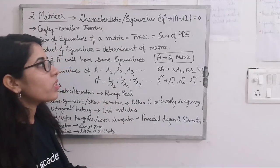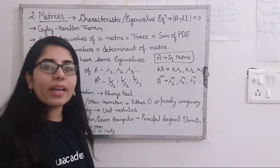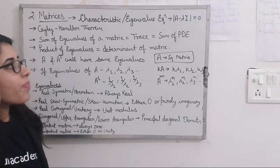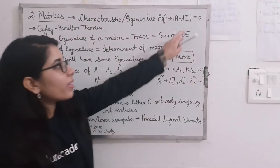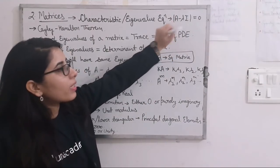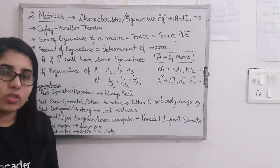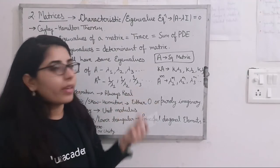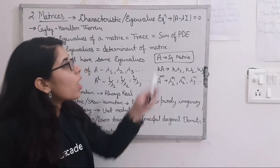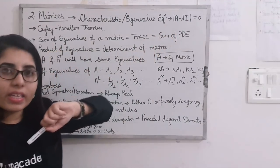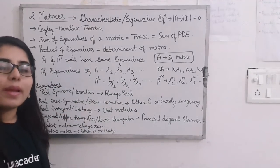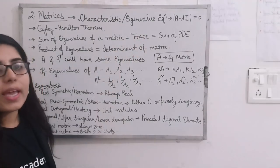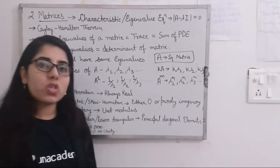The order of the identity matrix I depends on the order of matrix A — whatever order A is, I will be of the same order. Lambda here represents the eigenvalues. When you solve this equation, you get an equation in terms of lambda, and from there you can find the values of lambda, which are the eigenvalues of the given matrix.